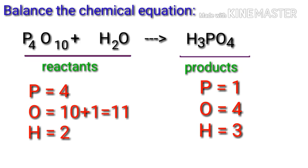The number of atoms is not balanced on both sides. To balance the chemical equation, we need to make use of coefficients. A coefficient is a number that we place in front of a chemical formula.